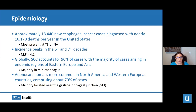However, adenocarcinomas are more common in North American and Western European countries, where they comprise about 70% of cases. The majority of adenocarcinomas are located near the gastroesophageal junction, otherwise known as the GE junction.